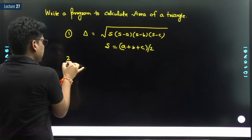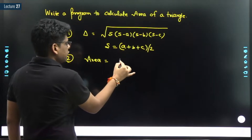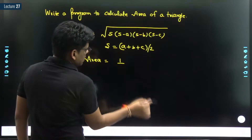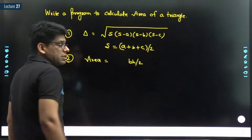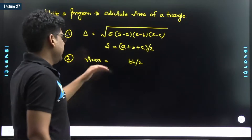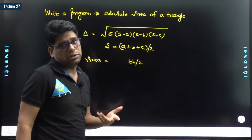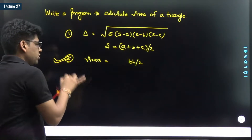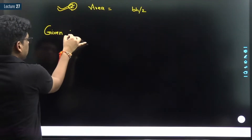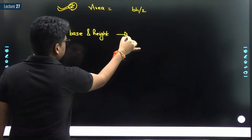Another formula: if the base and height of a triangle are given, then we can find the area as base × height / 2. There are so many formulas, so depending upon the situation we will write different programs depending upon what the inputs are. Let us write a program given base and height, and what we need to calculate is area.